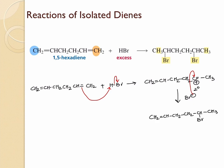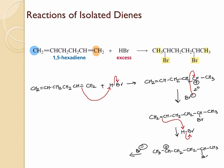Once the first electrophilic addition reaction is over, it reacts with the second equivalent of HBr, where this double bond attacks the hydrogen, thrusting electrons onto bromine. This results in formation of a new carbocation which then reacts with Br⁻ again, forming a bond between carbon and Br⁻ to give the di-bromo-substituted product. You can see that two Br atoms are added while two hydrogens are added as well.